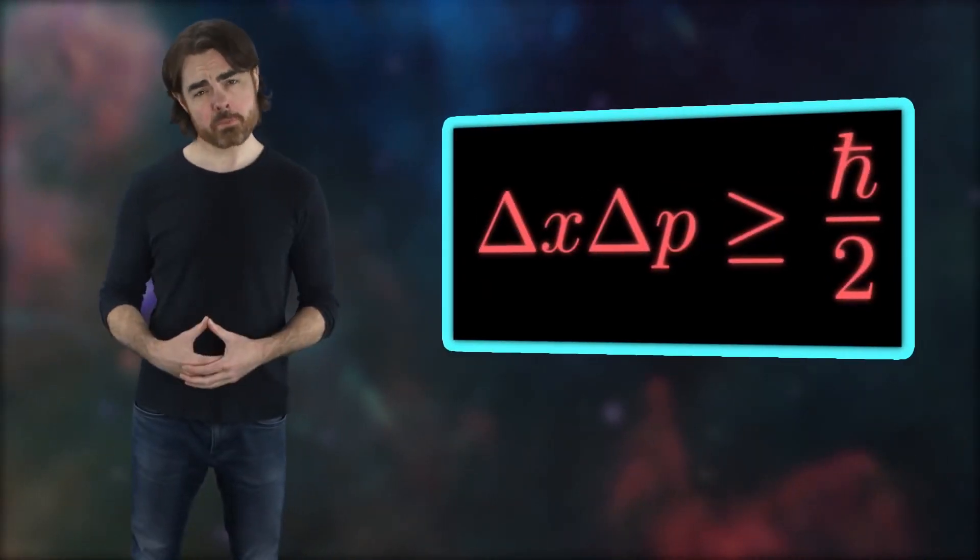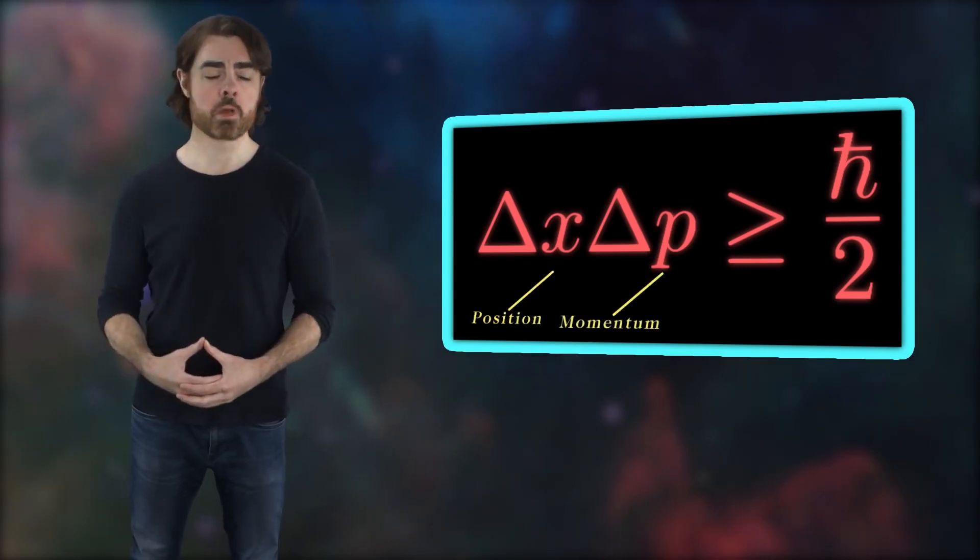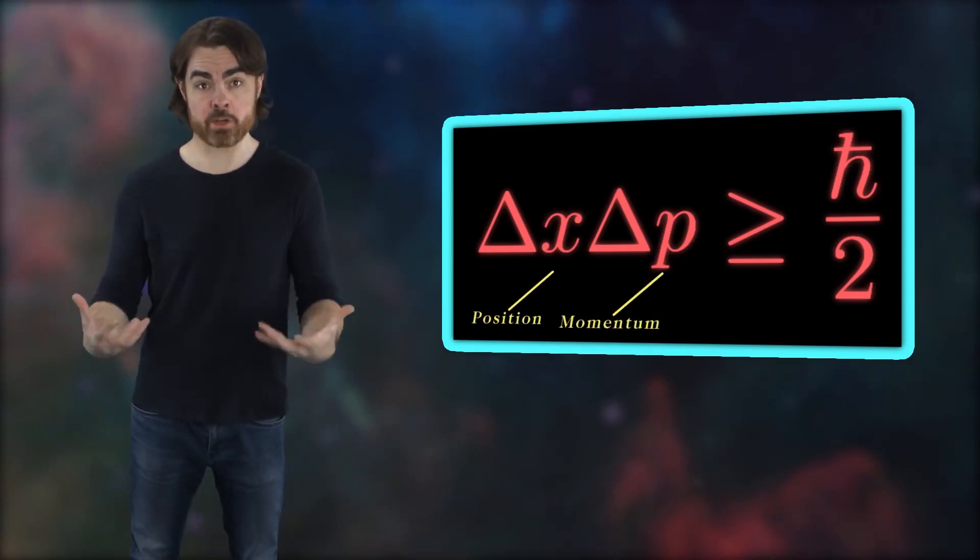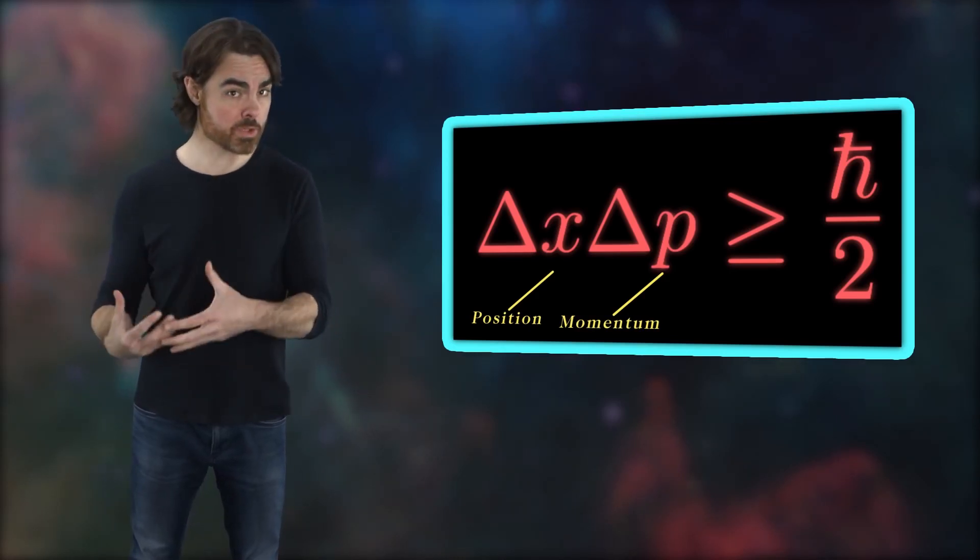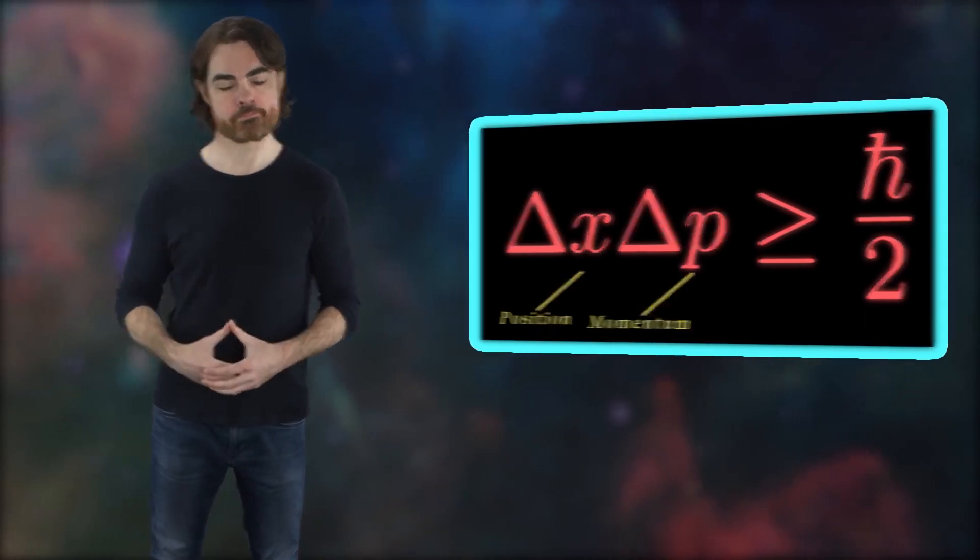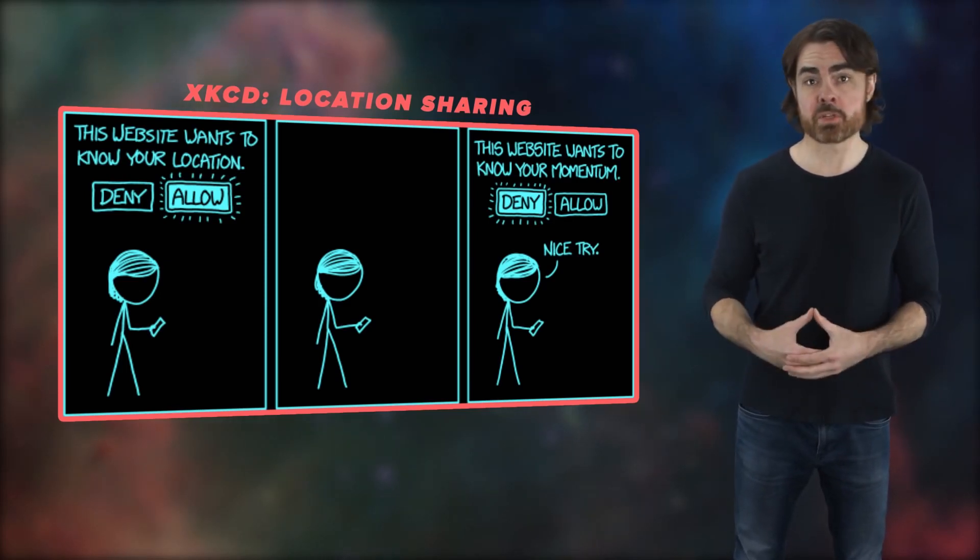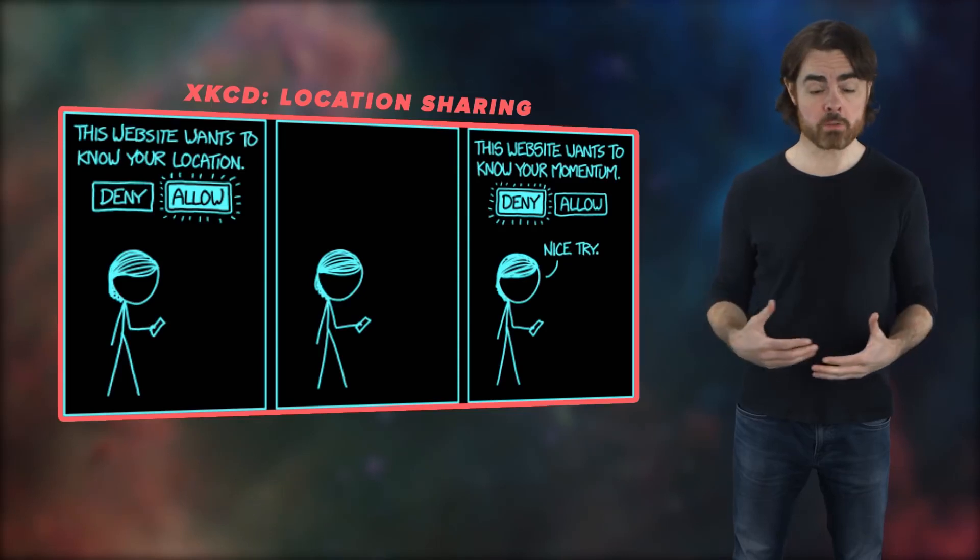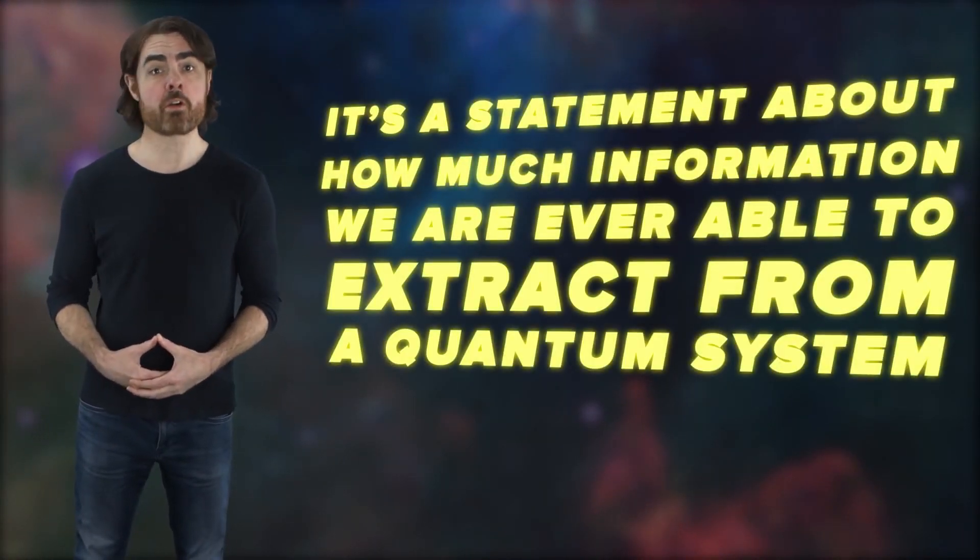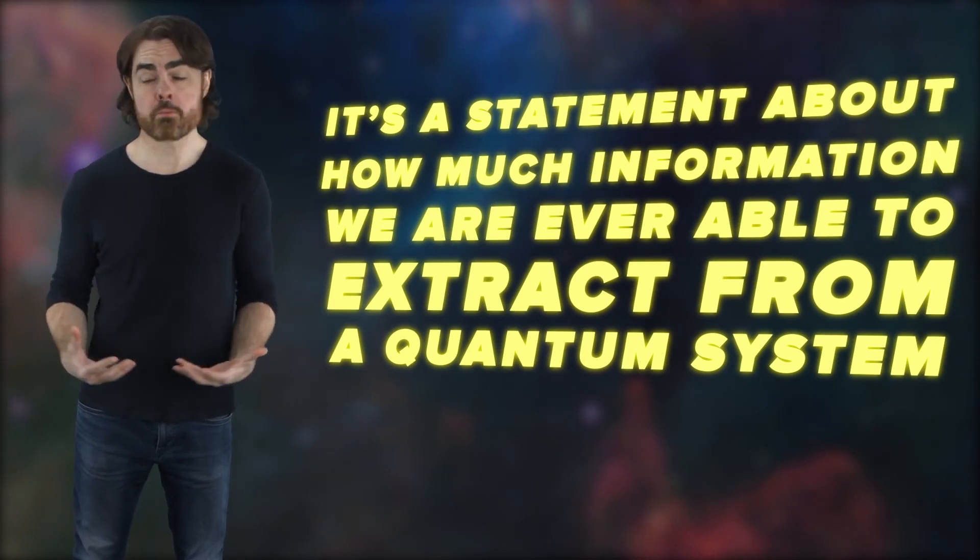The uncertainty principle is most often expressed in terms of position and momentum. We cannot simultaneously know both position and momentum for a quantum system with absolute precision. Try to perfectly nail down a particle's position, and we have complete uncertainty about its momentum. And it's not just because our measurement of position requires us to interact with the particle, therefore changing its momentum. The uncertainty principle exists alongside this observer effect. It's instead a statement about how much information we are ever able to extract from a quantum system.